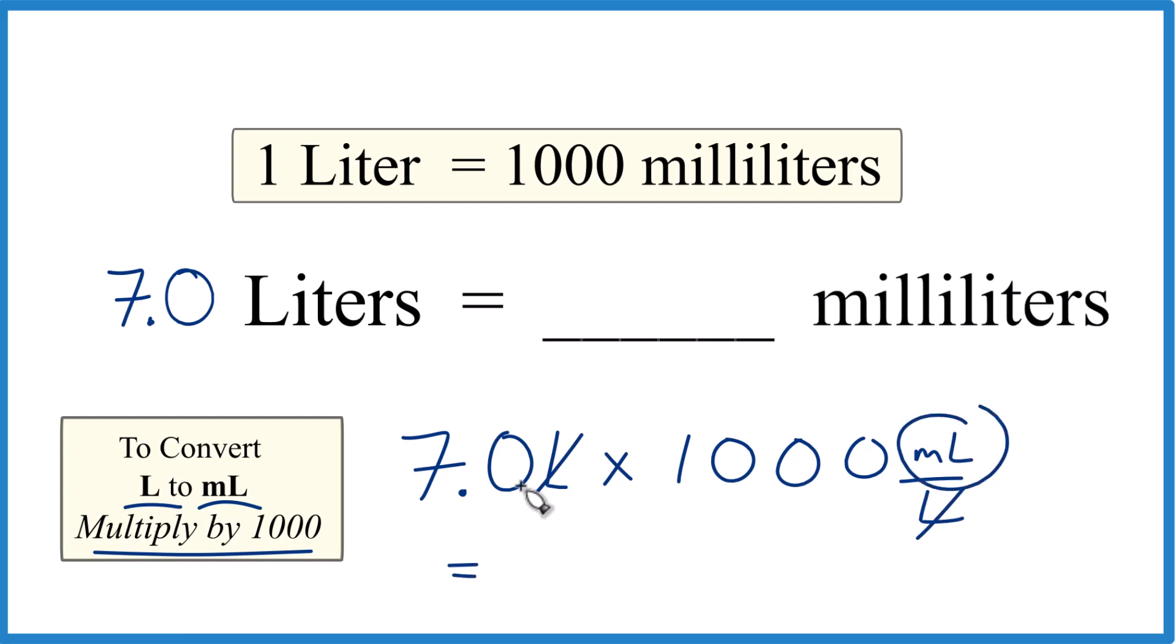That's what we're looking for. 7.0 times 1,000, and that is 7,000 milliliters. So in answer to our question, 7.0 liters converted to milliliters, we get 7,000 milliliters.